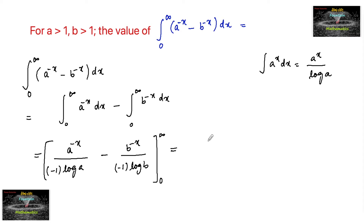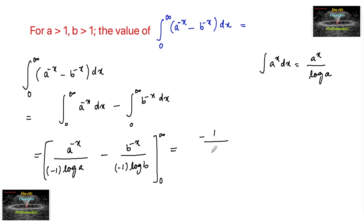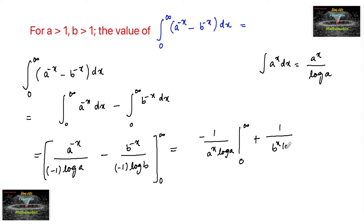This equals minus a to the power of minus x upon log a. Since a to the power of minus x equals 1 upon a to the power of x, we write this as minus 1 upon (a to the power x times log a), over the limits 0 to infinity. Then minus of minus gives plus: 1 upon (b to the power x times log b), over the limits 0 to infinity.